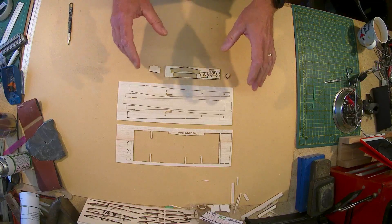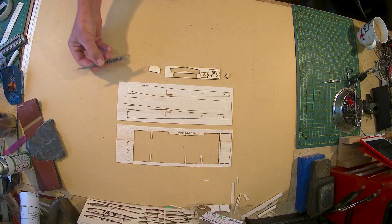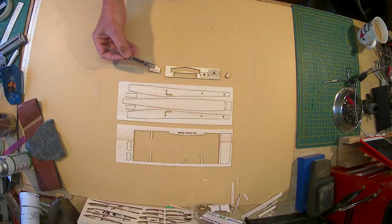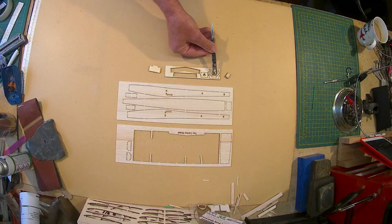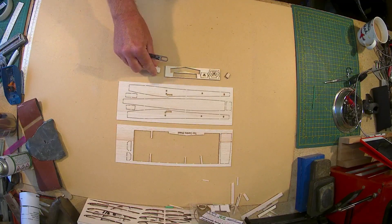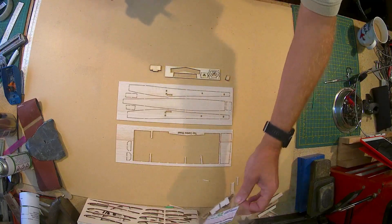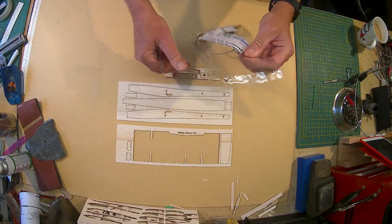Okay, so you're going to need fuselage, fuselage sides, and the ply formers out of the bag. We're not bothering with the nose at the moment, so just put that away safely.